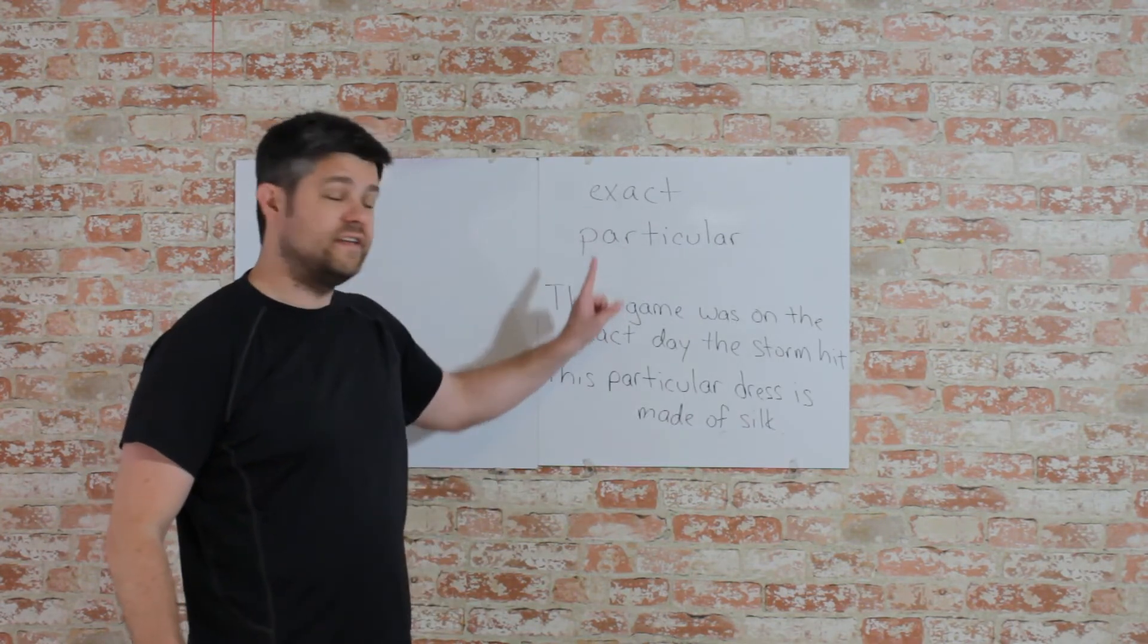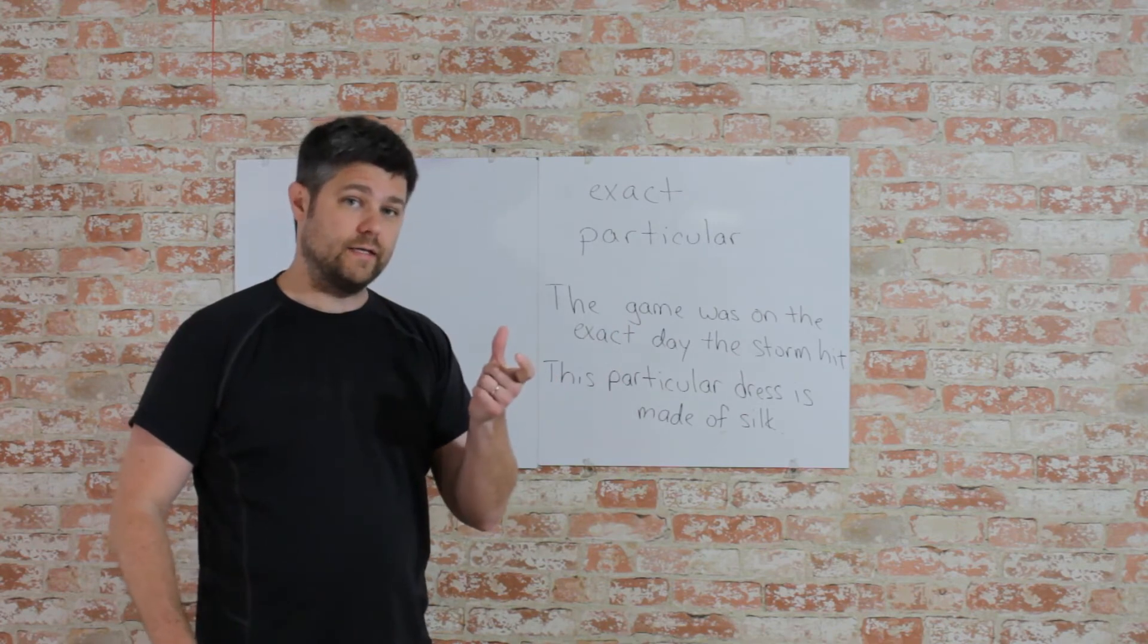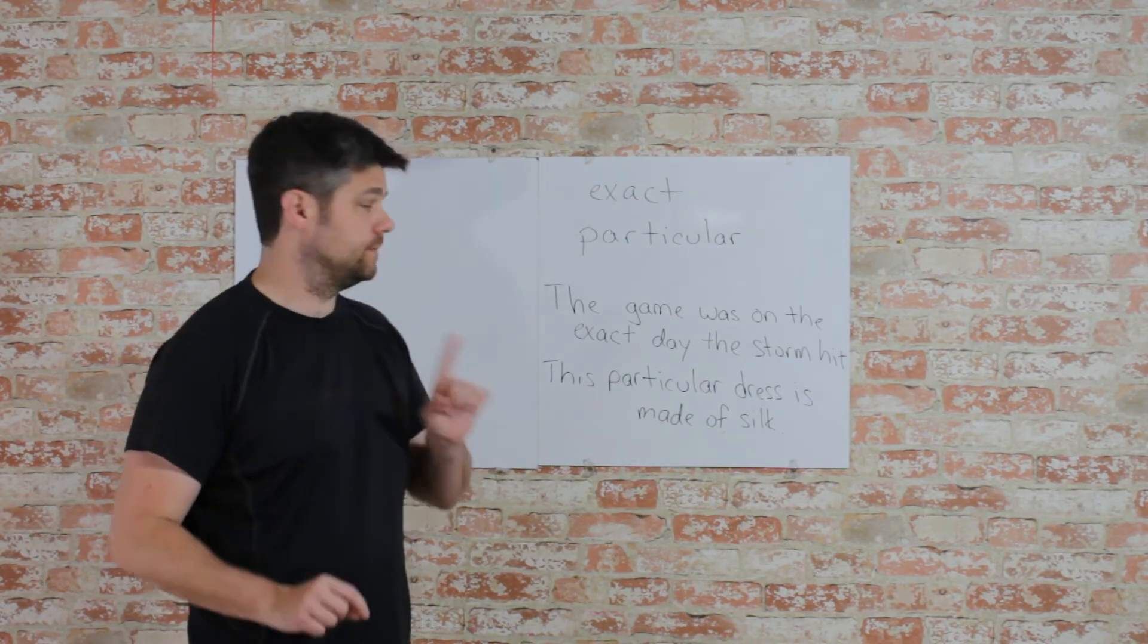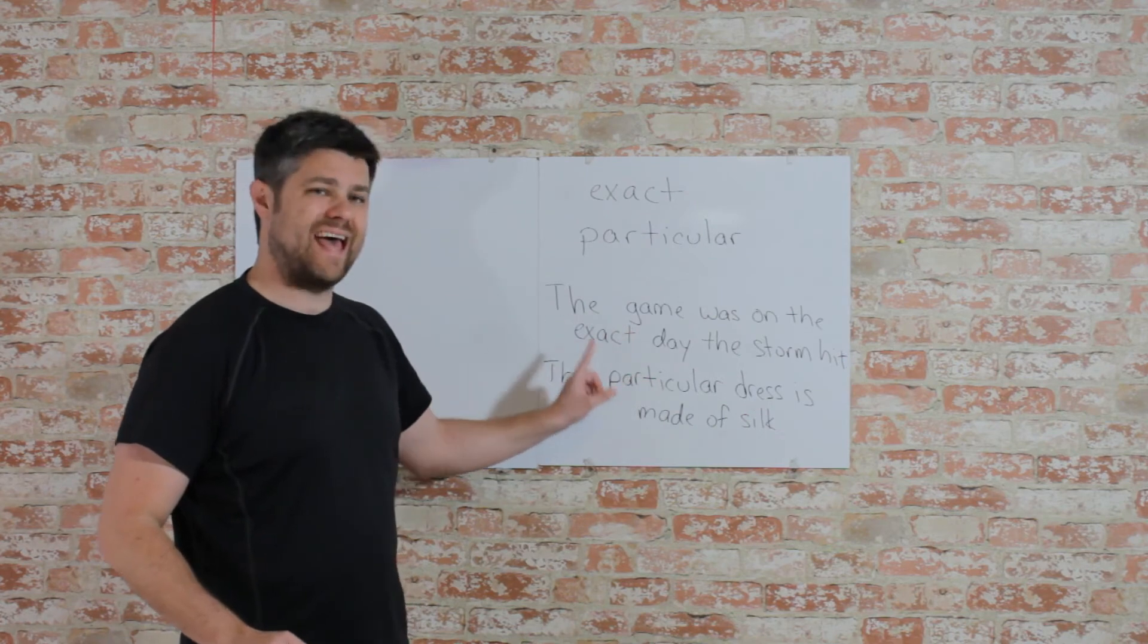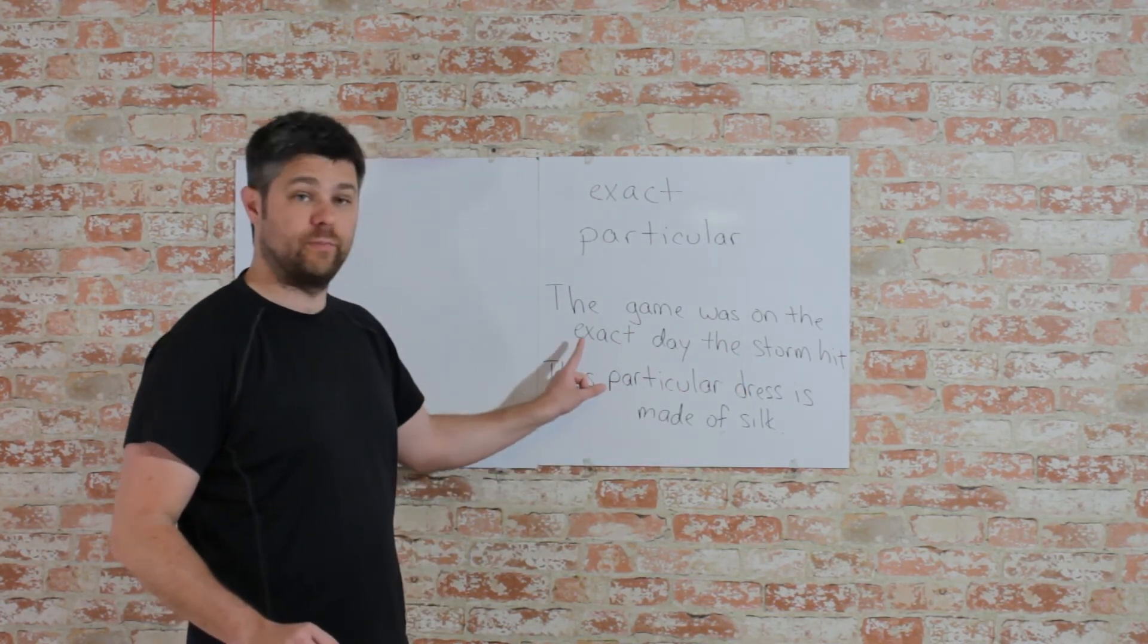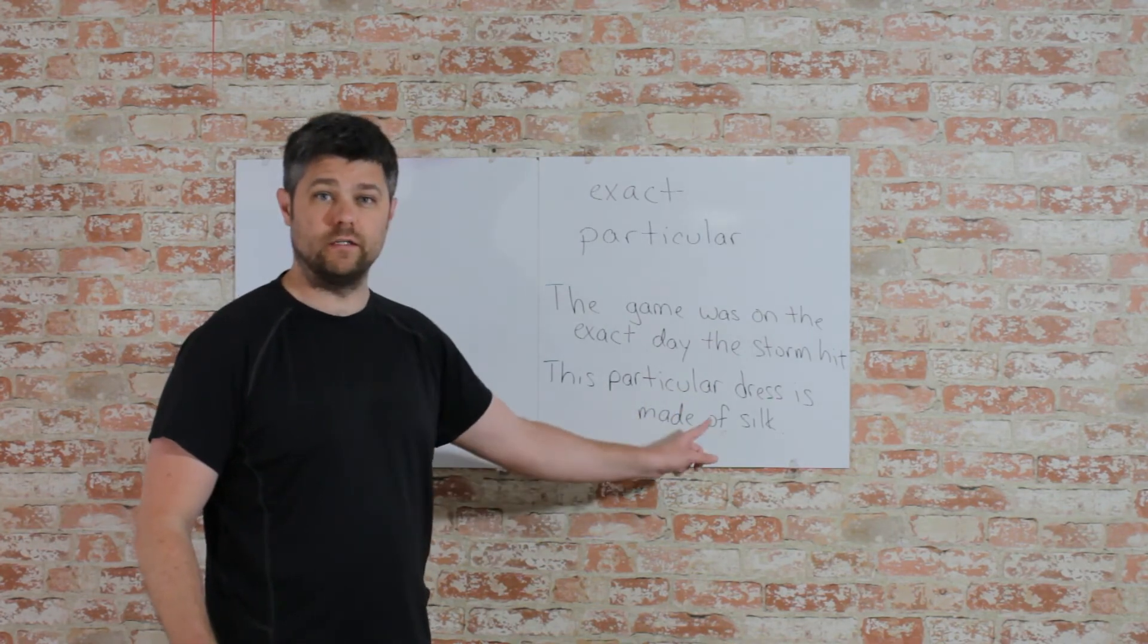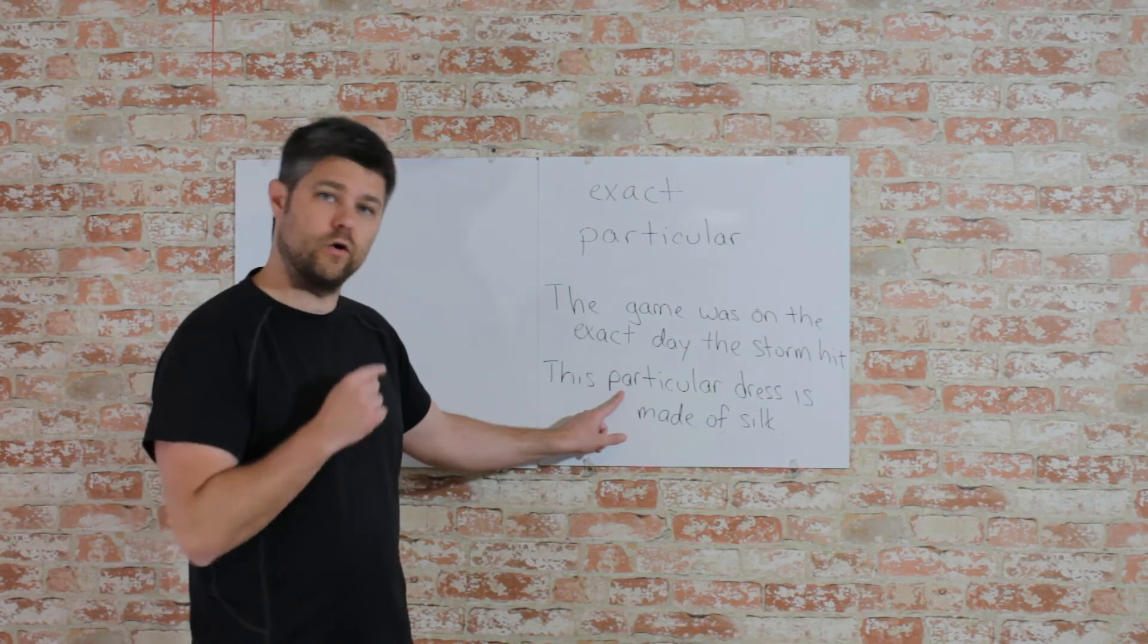With both of these examples, you can replace the new word with very perfectly. So, listen carefully. The game was on the exact day the storm hit. You can replace very right here. This particular dress is made of silk. Once again, you can replace very right there.